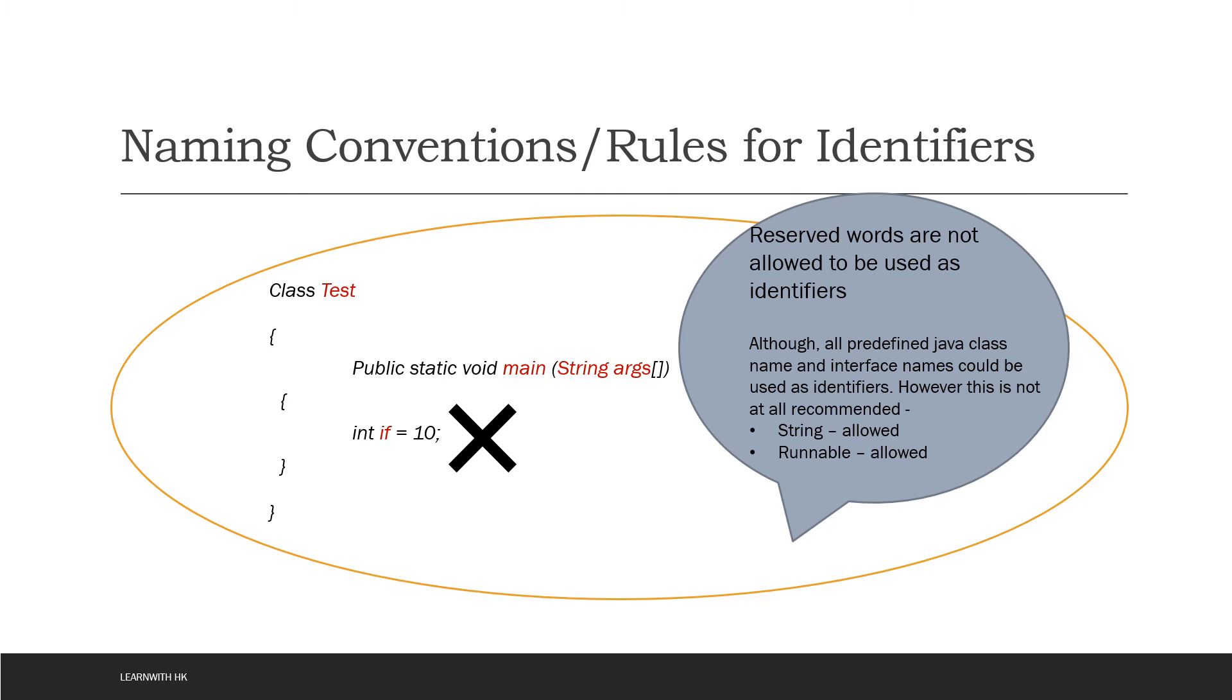There is one more rule. You cannot use reserve words as an identifier. That means reserve words are not allowed to be used as identifiers. If, is, int are nothing but reserve words in Java. We are going to discuss what are reserve words in our later sessions. But for now you can keep in mind that reserve words are not allowed to be used as identifiers.